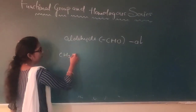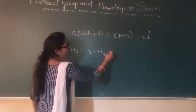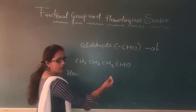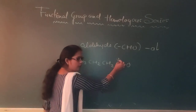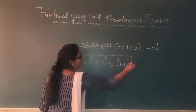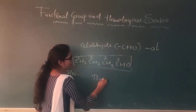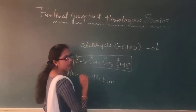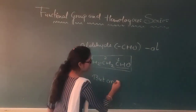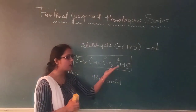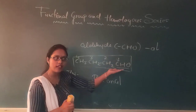Now next compound: CH3–CH2–CH2–CHO. IUPAC nomenclature karna hai is ka. Number one kis ko doge? Aldehyde-containing carbon ko. One, two, three, four — four carbon chain means 'but', single bond means 'an', and functional group is aldehyde, so suffix 'al'. Toh iska naam kya ho jayega? Butanal. So it is very simple — aldehyde mein aapko kya karna hai: agar aapko CHO dikh raha hai, to means this compound is aldehyde.